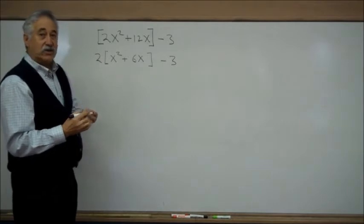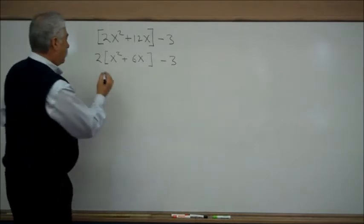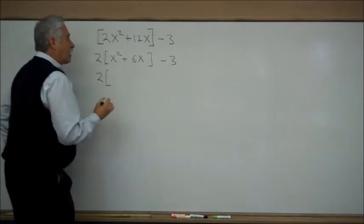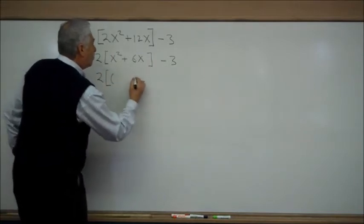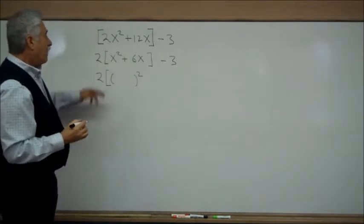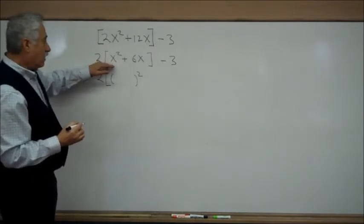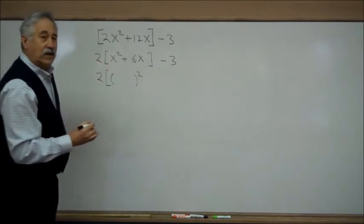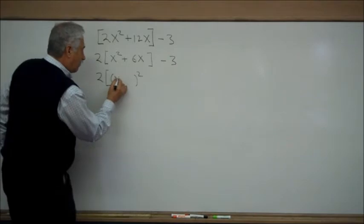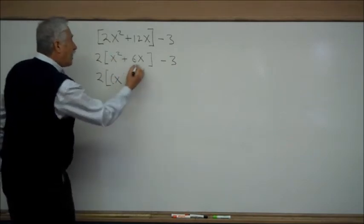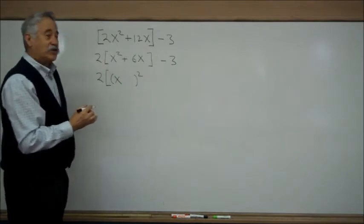Step three, which is actually completing the square, is as follows. Inside the bracket, we want to write a quantity squared that will create for us the x² and the plus 6x.